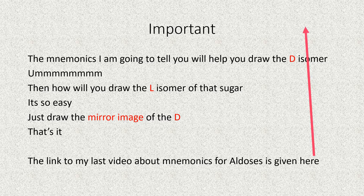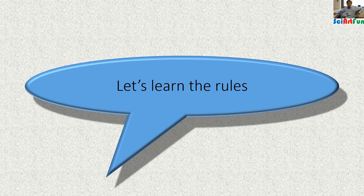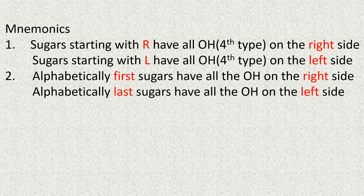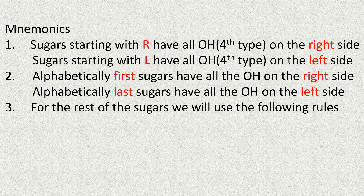The rules or mnemonics that you learned for aldoses in Part 1 of the video will also be used here, so the rules you learned for aldoses can also be used for ketoses. Rule number one: sugars that start with R will have all the hydroxyl groups attached to the fourth type of carbon on the right side, and those starting with L will have all those hydroxyl groups on the left side. Rule number two: the alphabetically first sugars will have all the hydroxyl groups on the right side, and alphabetically last sugars will have them on the left side.